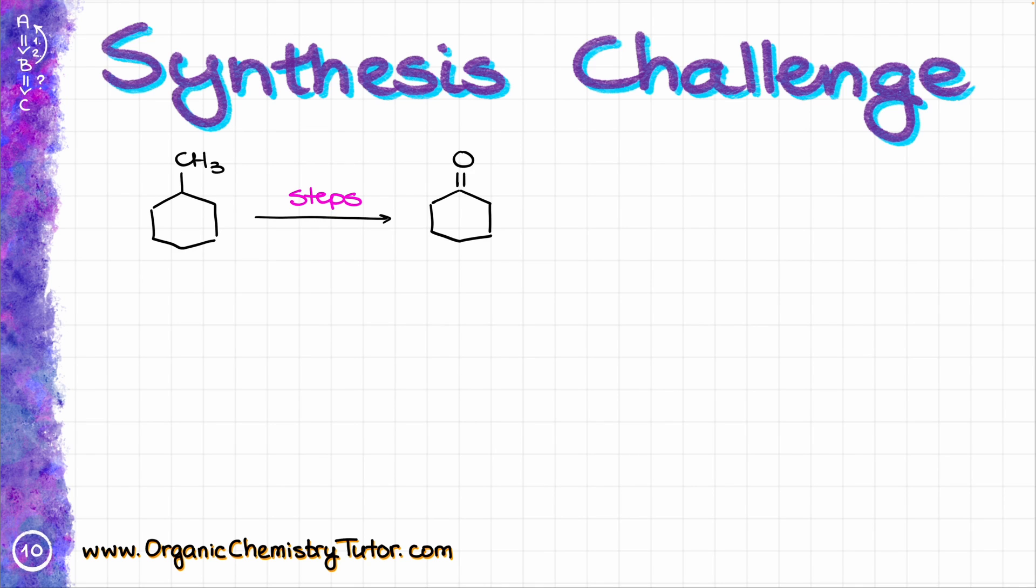So how am I going to approach something like that? Usually the very first thing I'm going to look at is the number of carbons in my starting material and my products, and also the type of functional groups that I have.